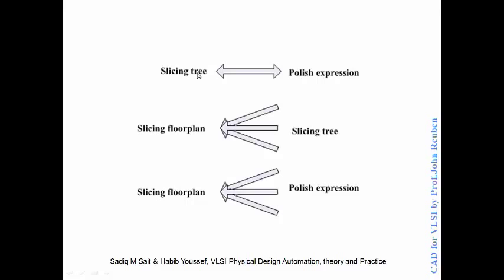There is a one-to-one correspondence between the polish expression and a slicing tree. But there is a problem: for a slicing floor plan, we can have many slicing trees possible. You can start with any cut as long as it goes through the entire floor plan — horizontal or vertical — and there can be multiple vertical cuts possible even to start with. So it is possible to have multiple slicing trees representing the same floor plan, and because each slicing tree has a unique polish expression, we end up with multiple polish expressions representing the same floor plan.